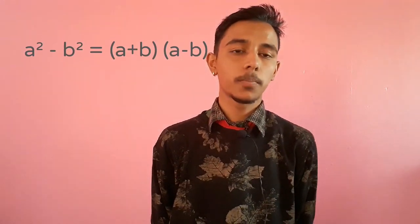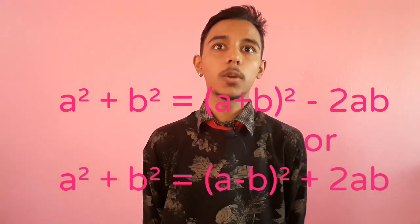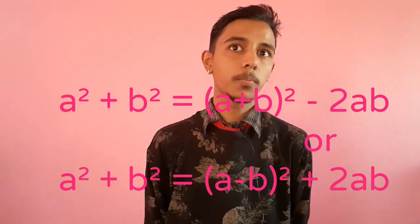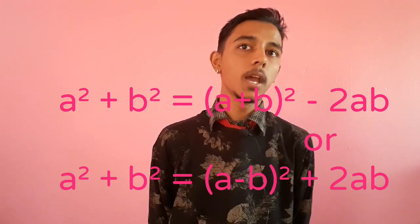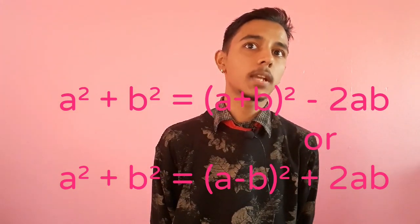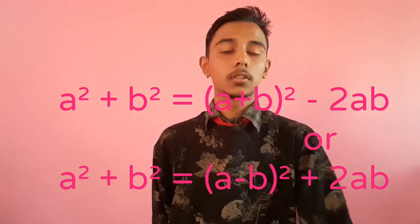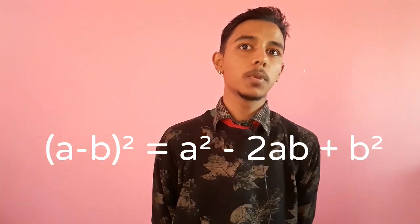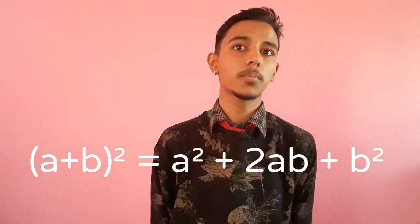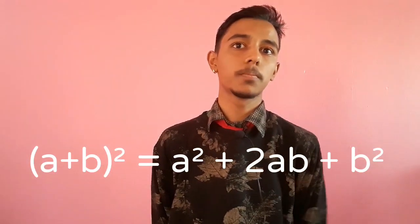Today I am here to deliver the four formulas of algebra. The first one is a square minus b square equals to a plus b into a minus b. The second one is a square plus b square — there are two formulas: a plus b whole square minus 2ab, and a minus b whole square plus 2ab. The third one is a minus b whole square equals to a square minus 2ab plus b square. And finally, a plus b whole square equals to a square plus 2ab plus b square.